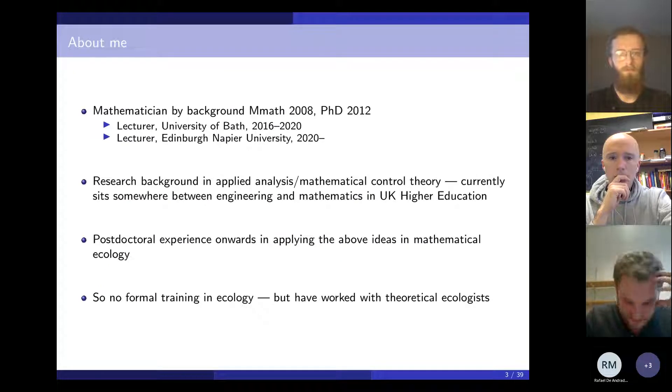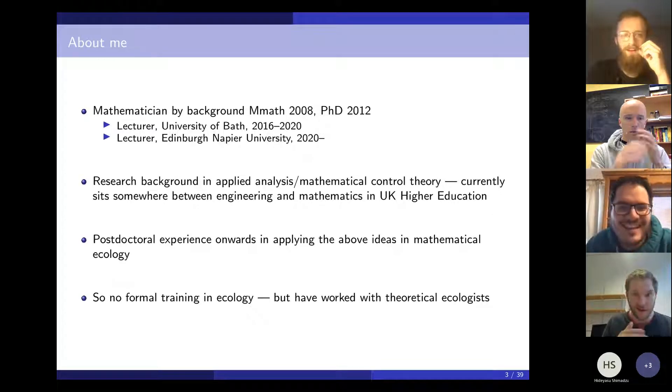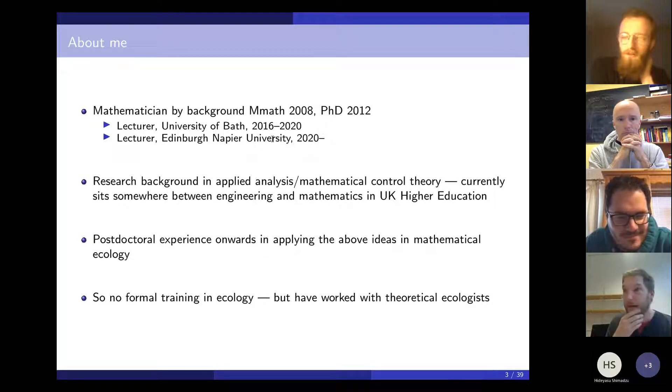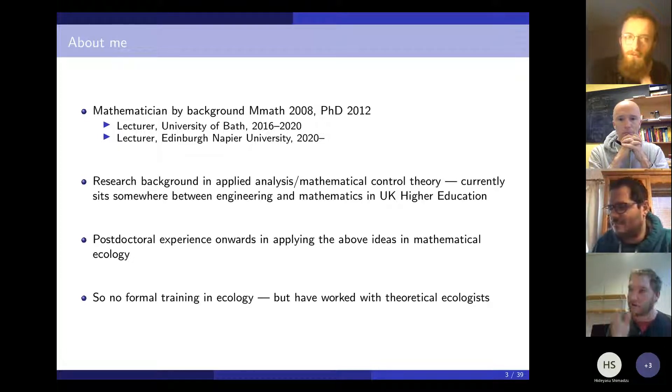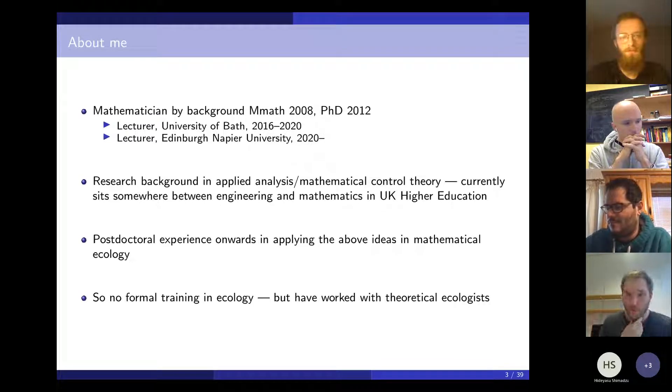A bit about me. Blake's already said a lot of this, but I partly included this slide to address my own sense of imposter syndrome. I'm presenting to a theoretical statistical ecology seminar, but I'm a mathematician by training. First degree and PhD in 2008 and 2012 respectively. I've had academic experience at both Bath and now at Napier. I'm a mathematician by background with an interest in math control theory, and in UK higher education this sits somewhere between maths and engineering. My journey into developing or applying these ideas in theoretical ecology started from postdoctoral research. I have no formal training in ecology—there are large gaps in my knowledge. The experience I have I've picked up from working with theoretical ecologists.